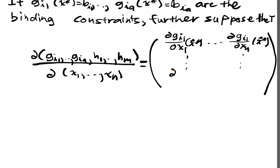This will be DGi1 Dx at X star, DGi1 Dxn at X star, all the way down to DGiA Dx1 X star, DGiA Dxn X star.